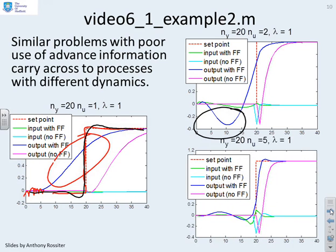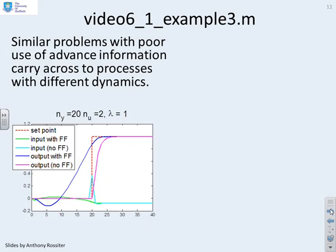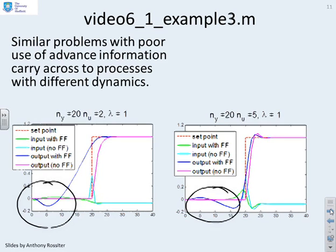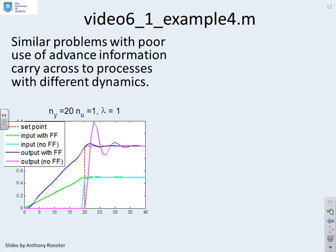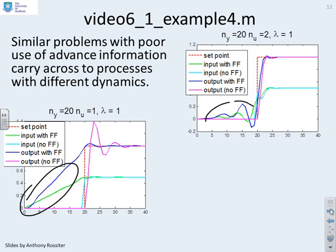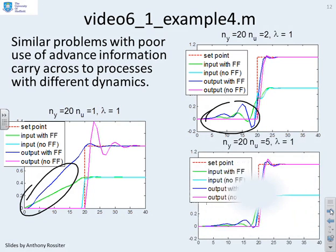Here's example 3, a system with very different dynamics, and once more you see a nasty dip and a rather slow response. With nu equals 5, you see this messing around - a fast response when you get close but a lot of messing around beforehand. Finally example 4, and again you see a rather slow response in transients. If I increase nu, there's a lot of messing around which isn't needed.